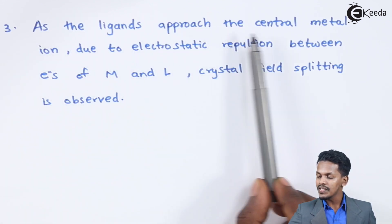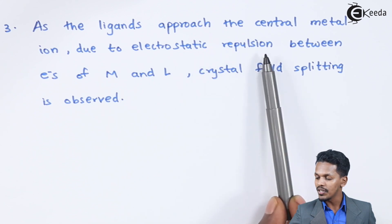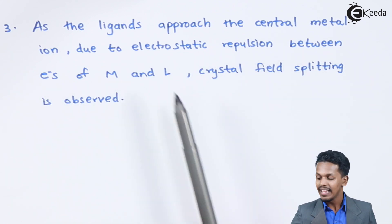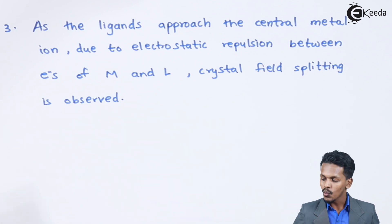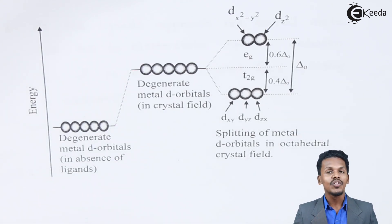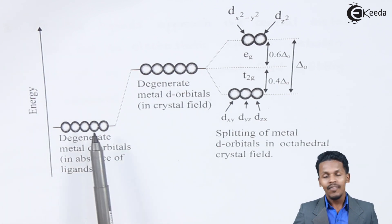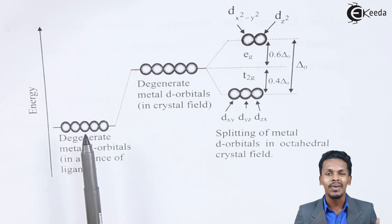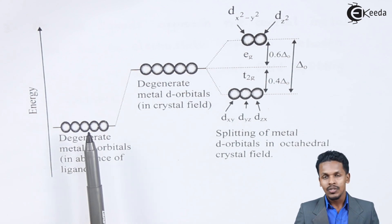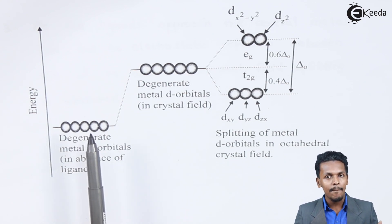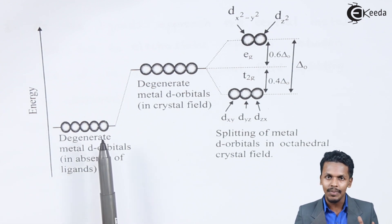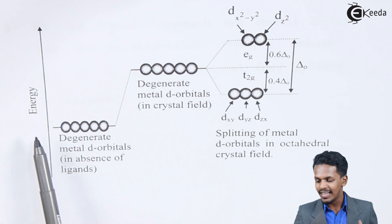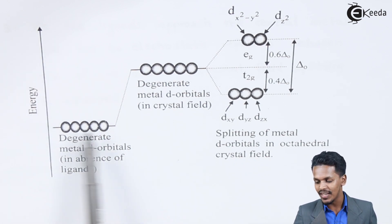The third point: as the ligand approaches the central metal ion, due to electrostatic repulsion between the electrons of metal and ligand, crystal field splitting is observed. This diagram shows the crystal field splitting. The metal consists of d orbitals, and when no ligand is attached, all five d orbitals are degenerate — they have the same energy level.